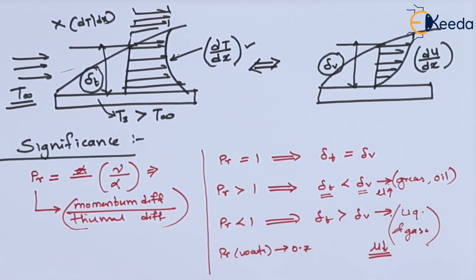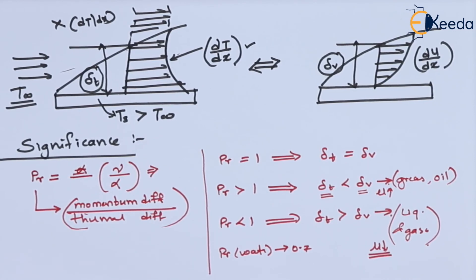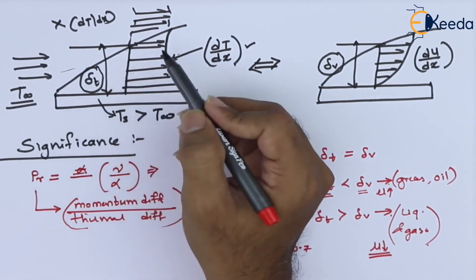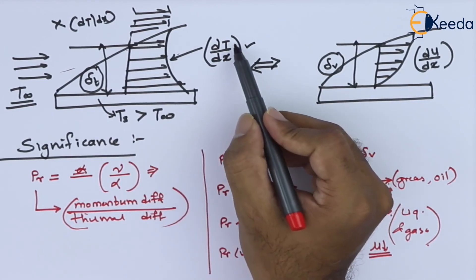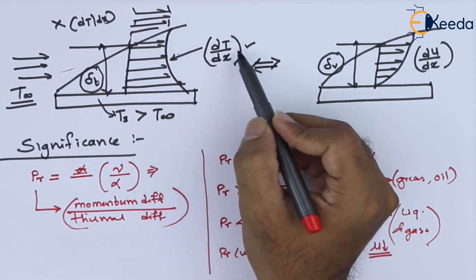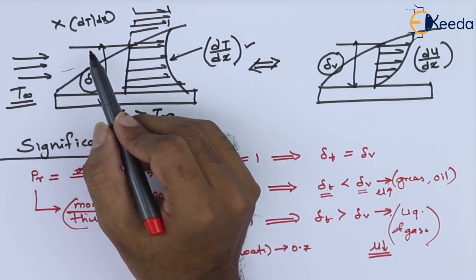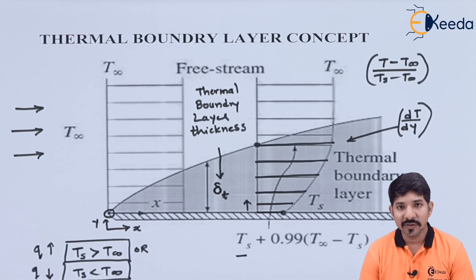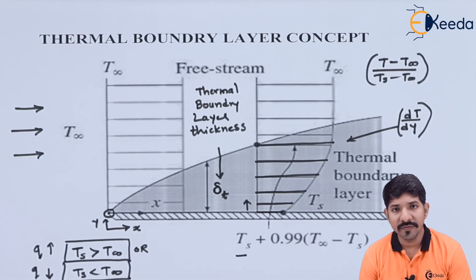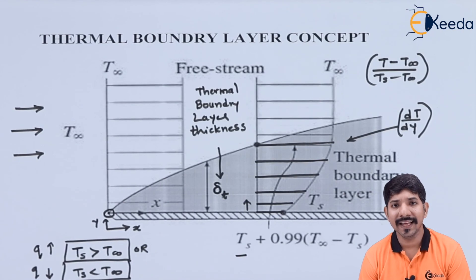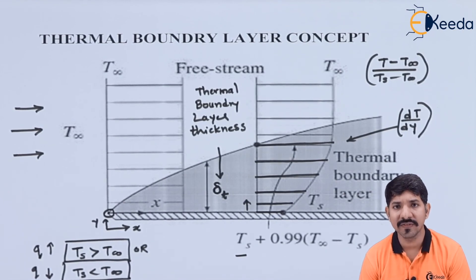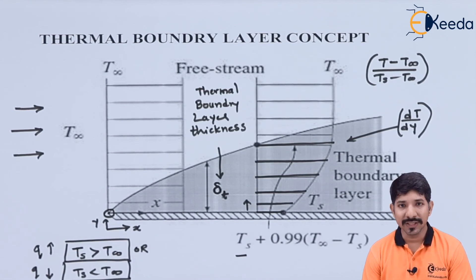What we have done with the help of this thermal boundary layer is classify the given region into two regions: one region where delta T exists, and the other region where delta T does not exist. In this topic, we have discussed the thermal boundary layer thickness, its significance, and its analogy with respect to the velocity boundary layer thickness. Thank you for watching this video.